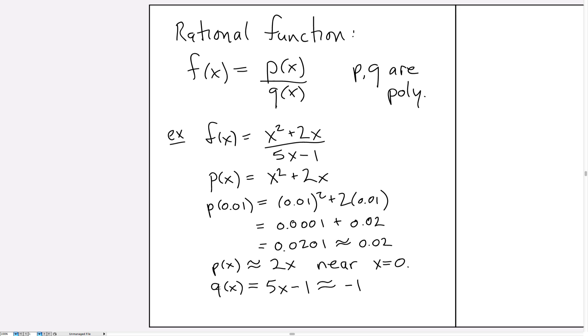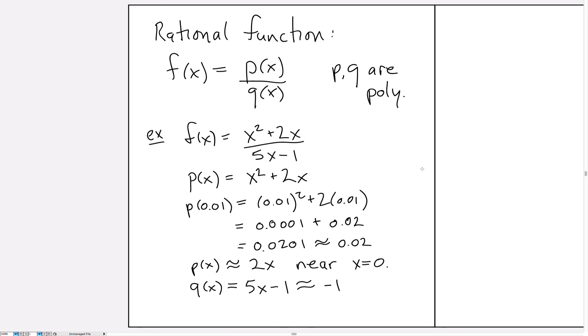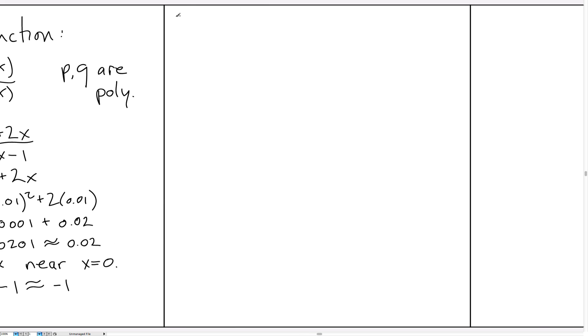Now we have asymptotic approximations for p and q, so let's put those together and get an approximation for f. f(x), which was originally x squared plus 2x over 5x minus 1, we're going to approximate by 2x over minus 1. So f(x) is approximately equal to minus 2x near x equals 0. We can plug in values to see how close to 0 we need to be for this approximation to work.